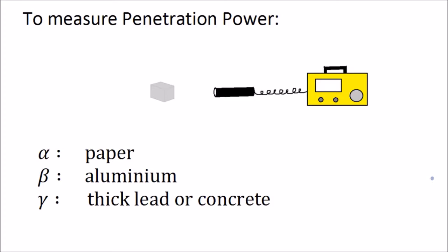Now to measure penetration power, in other words what materials does it get stopped by and what materials does it pass through, again we can use a Geiger tube and counter and a radioactive source. But this time we keep the distance fixed and instead we put certain materials in the way and we see if those materials are able to reduce the count rate to zero. If the count rate falls to zero that means the radiation has all been blocked by the material.